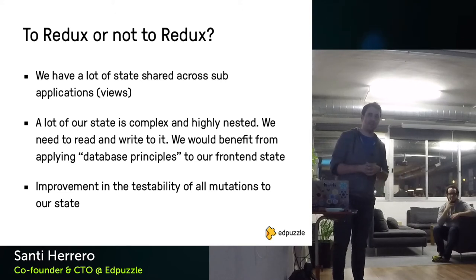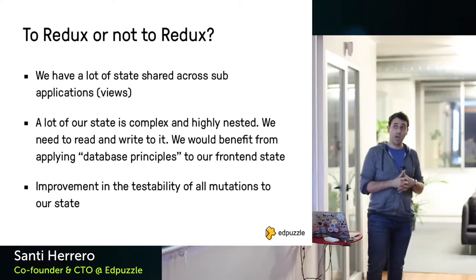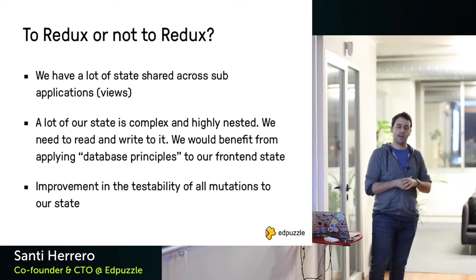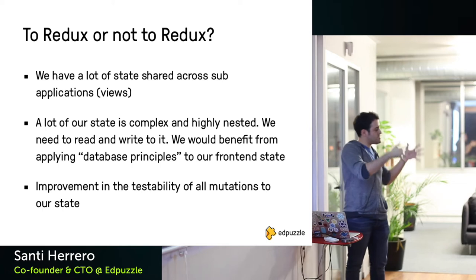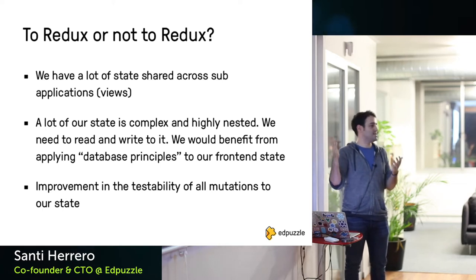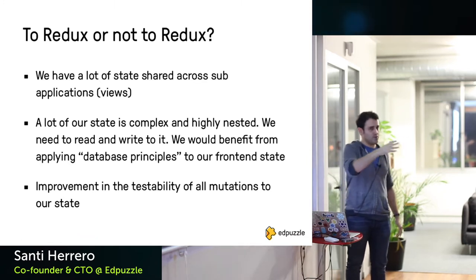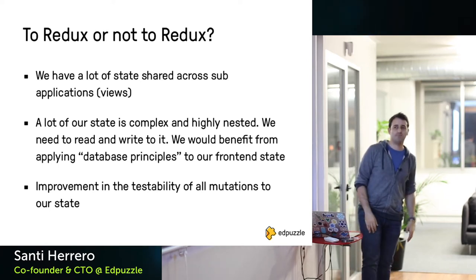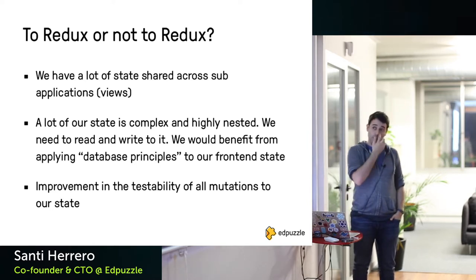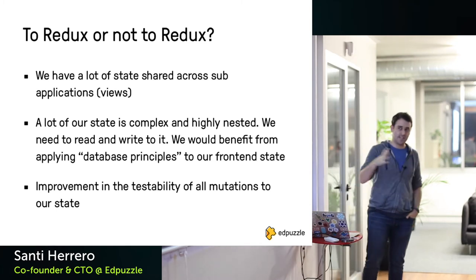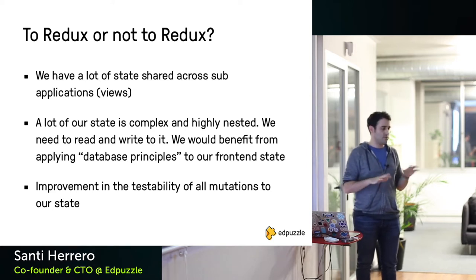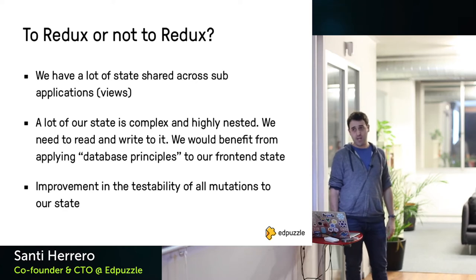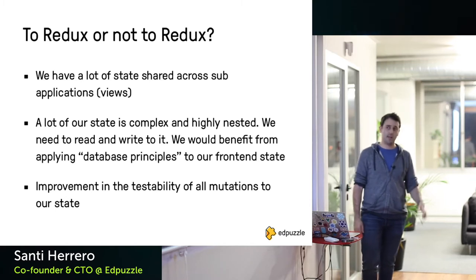We also have a lot of shared state between different sub-applications. For apps like banking where each screen has its own state, you probably don't need Redux as much. But for us it was very important. Our state is also very complex — an assignment has a video, the video has an unknown amount of questions, each question has many answers. There's a lot of nested state, and doing that in Backbone causes pain. Redux also brings testability of state mutations and serves as documentation of all possible mutations, which even helps onboarding new developers.